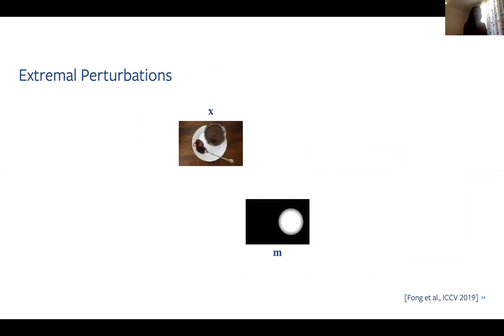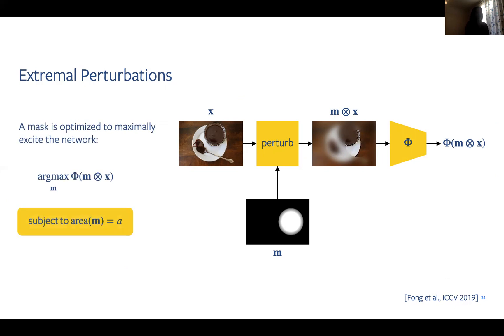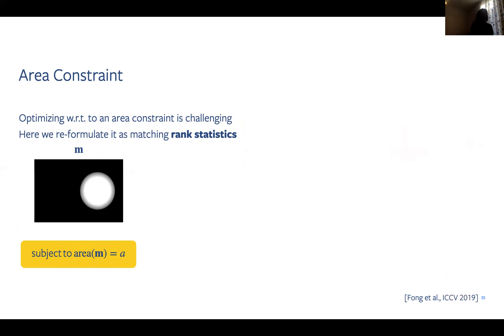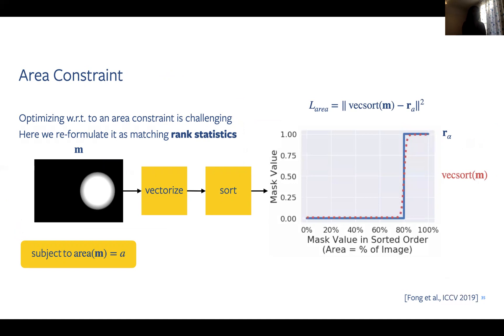To find an extreme perturbation, we learn a mask that perturbs an input and is then fed into a network. We want that learned mask to one, maximally excite the network, and two, be subject to a hard area constraint. Optimizing such area constraint is challenging. Thus, we reformulate it as a novel rank-based loss. To do this, we vectorize and sort our mask and then compute the L2 distance between the actual and target distribution of the sorted mask values. Here, we optimize our mask with 20% of pixels on.